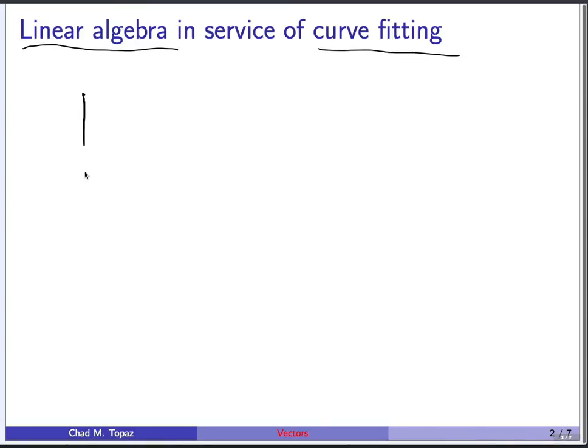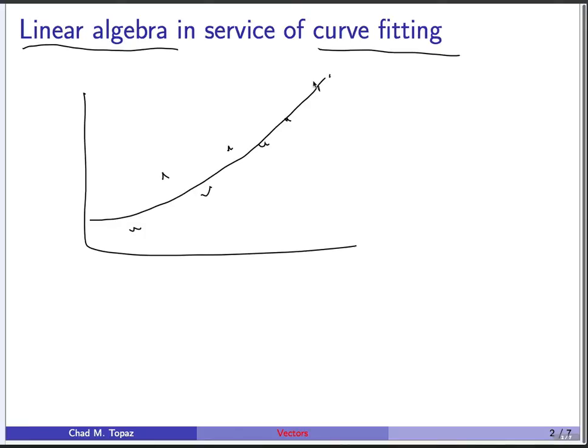The basic idea is you might have some data, and you might have in mind some curve that best fits that data. You'd like to find that curve given a particular functional form that you might choose. Once you choose the form of that function, you have to find the parameters of the function to make it best fit the data. You can use tools from linear algebra to do that, and that's where you'll get to by a few screencasts from now.